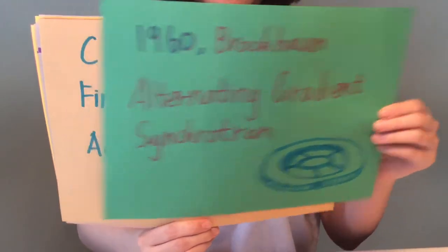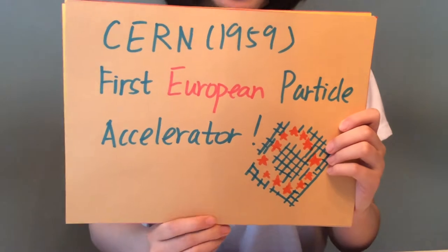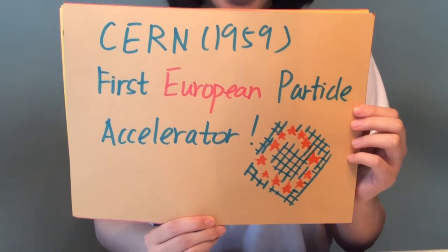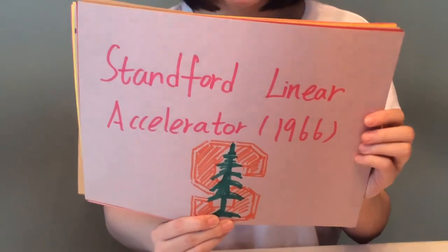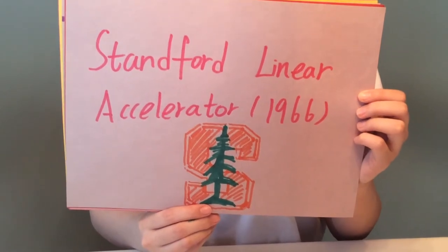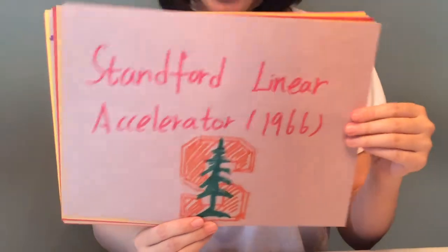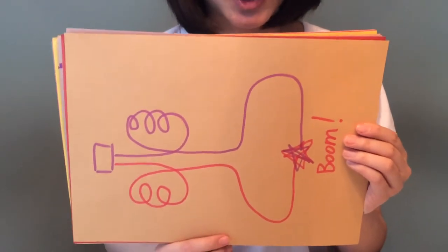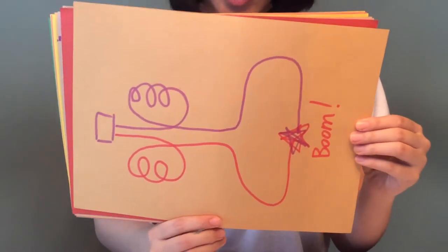After that, CERN, the first European particle accelerator, was also built at that time. Later on, the Stanford linear accelerator became operational in 1966. It can accelerate electrons to 30 GeV in a 3 km long waveguide, buried in a tunnel and powered by hundreds of large klystrons.